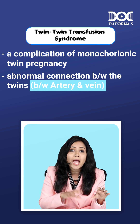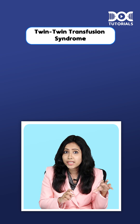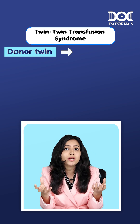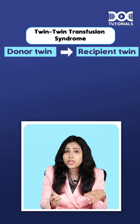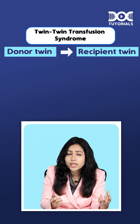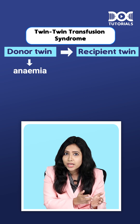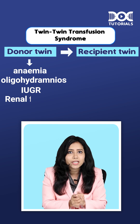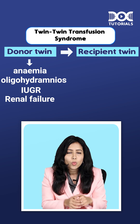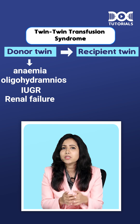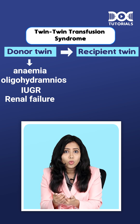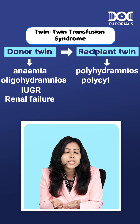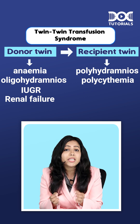This connection is between an artery and vein. The donor twin donates blood to the recipient twin, due to which the donor twin develops anemia, oligohydramnios, IUGR, and even renal failure. The recipient twin, receiving too much blood, develops polyhydramnios, polycythemia, and even cardiac failure.